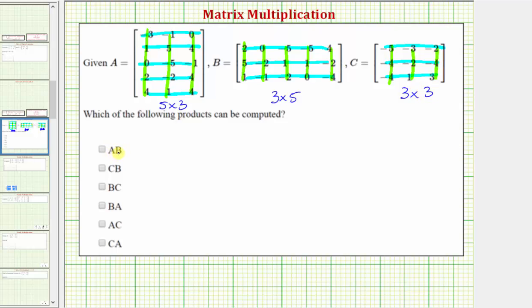First we have A times B, where matrix A is a five by three matrix and matrix B is a three by five matrix. We focus on the number of columns in the first matrix and the number of rows in the second matrix. Because three equals three, we can compute matrix A times matrix B, and the result is going to be a five by five matrix.